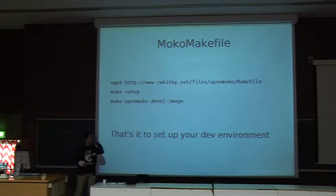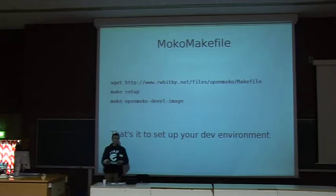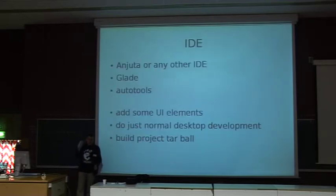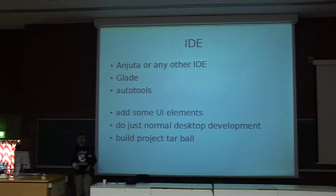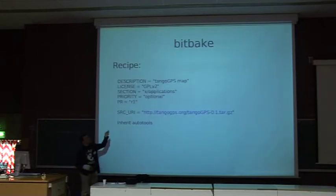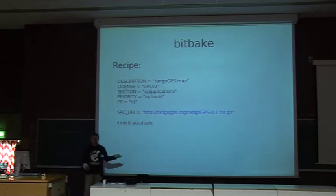After setup, you run 'make openmoko-development-image', which compiles the whole image ready for flashing onto the device — absolutely no brainer. Just three steps and you can go. I've been using Anjuta as my IDE because it makes things easy. You use autotools, produce your source code, and later run 'make' to build your distribution. OpenEmbedded uses a recipe where you put in the location of your tarball, and it automatically compiles it and produces a package.